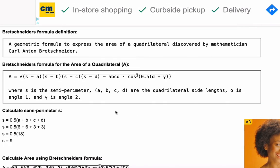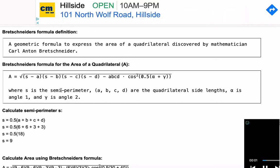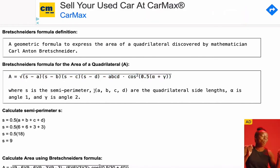Now, Bretschneider's formula for the area of a quadrilateral is as follows. A equals the square root of all this, and then each term is listed here. So S is the semi-perimeter, A, B, C, and D are the quadrilateral side lengths which you entered above. Alpha is angle one, and gamma is angle two.